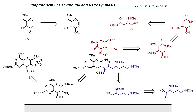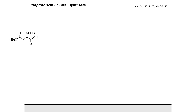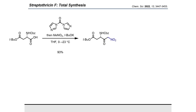In the forward direction towards our streptolidine isothiocyanate, we began with our protected aspartic acid. Upon treatment with carbonyl diimidazole, the activated anhydride reacted smoothly with a solution of excess nitromethane and stoichiometric triethylamine oxide to form the nitroketone.